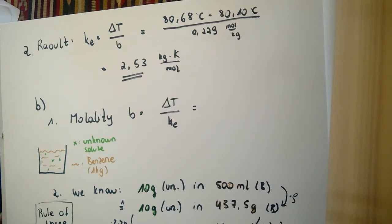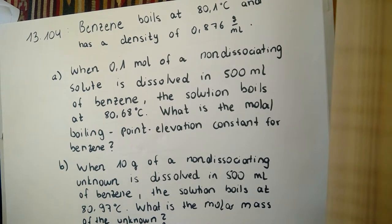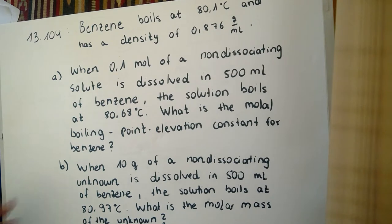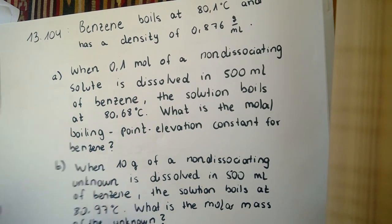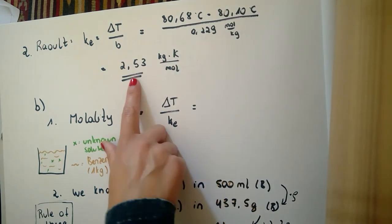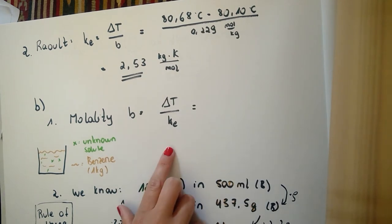Now we take a look at part B. It says that 10 g of a non-dissociating unknown is dissolved in 500 mL of benzene. The solution boils now at 80.97 degrees. What is the molar mass of the unknown? We already calculated the ebullioscopic constant of benzene, so we can use it to calculate the molality of our solute in B.